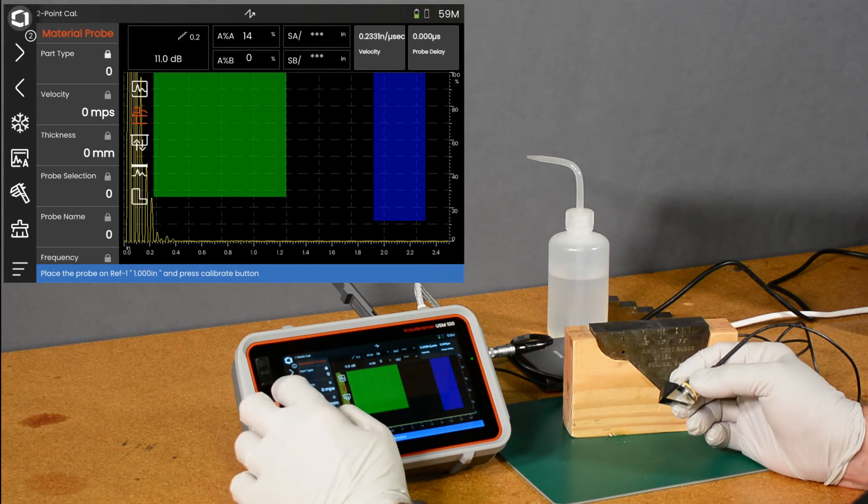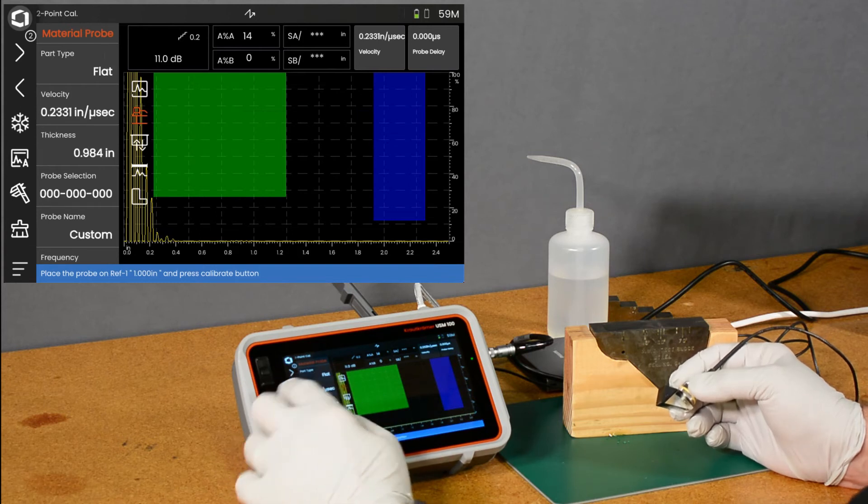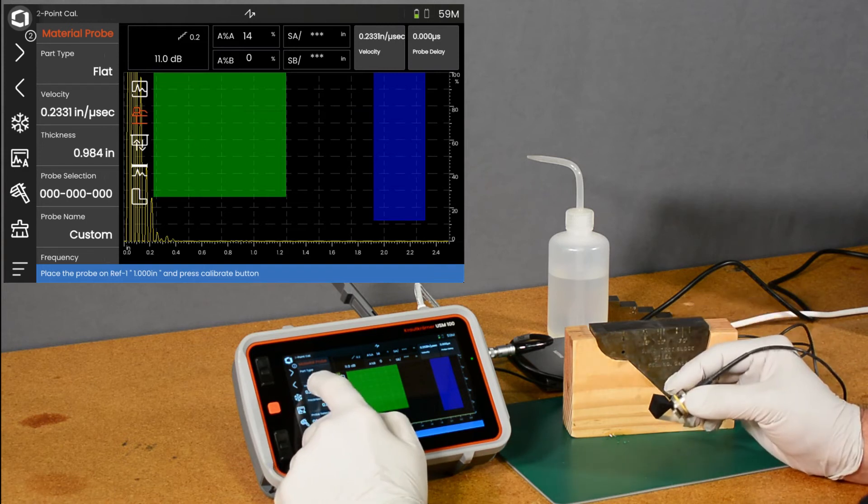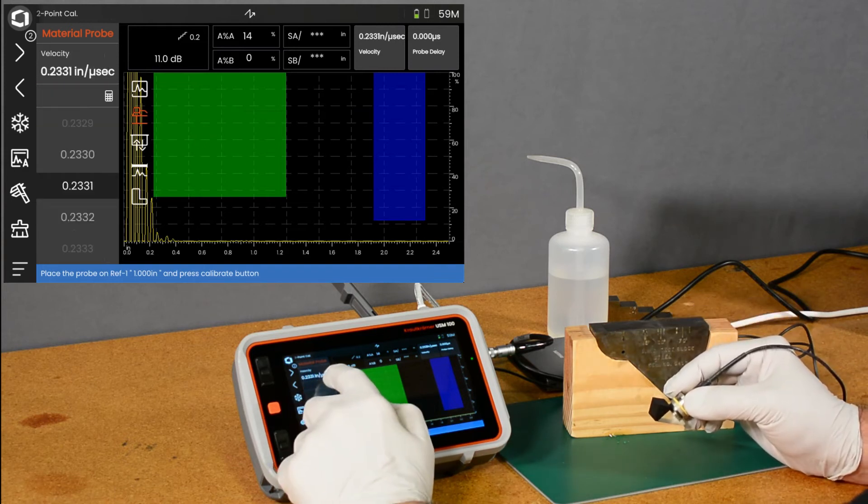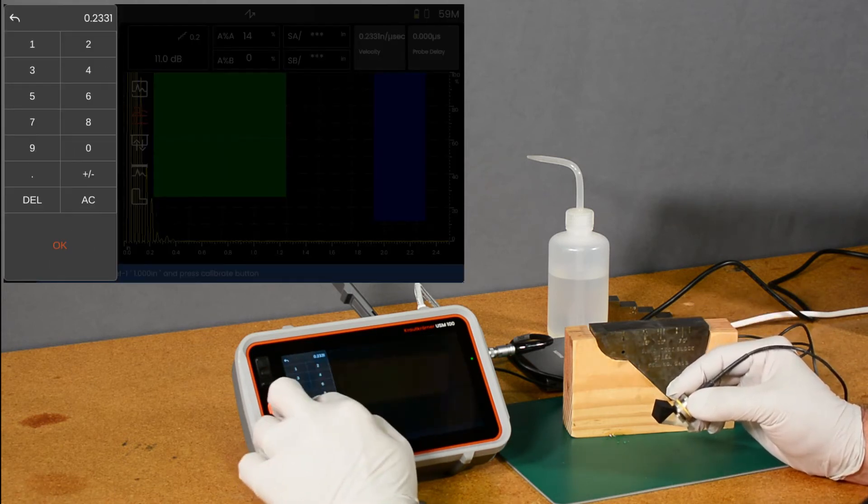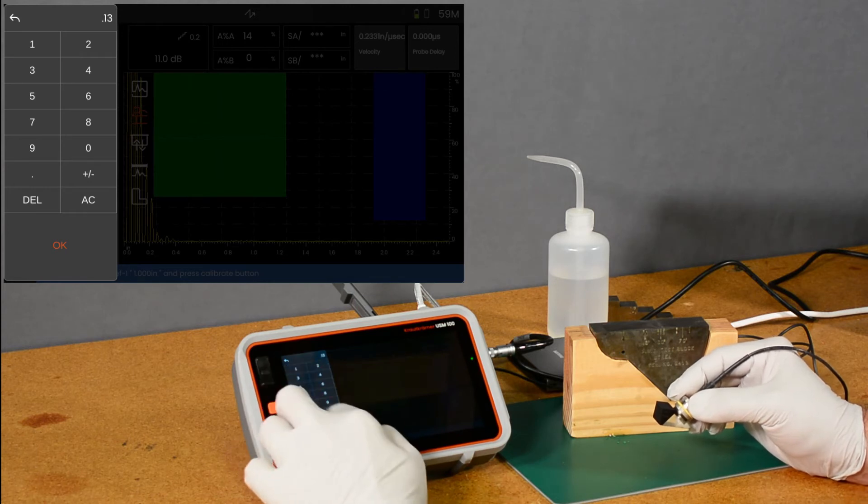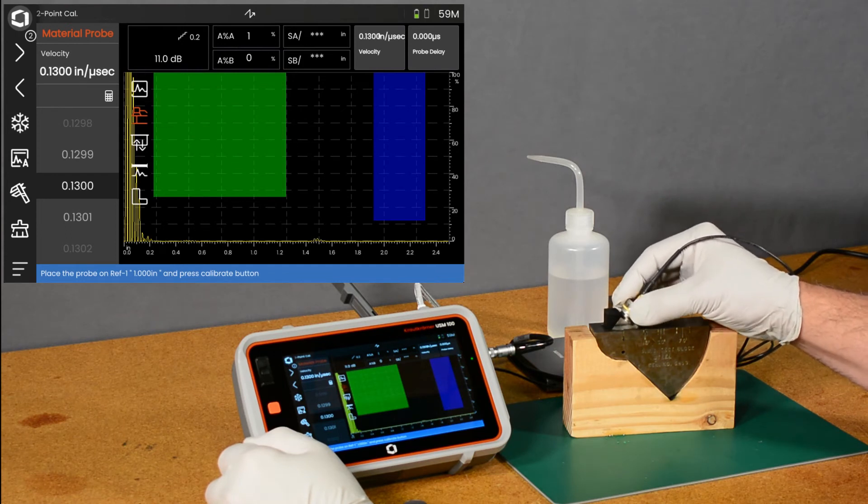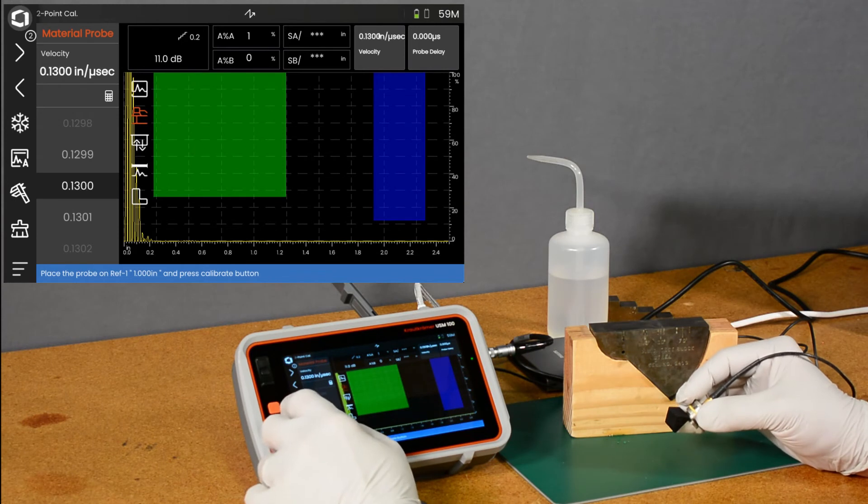So let's go back here and set up. Go to our probe menu. First thing we ought to do, since we're going to be working in shear wave, is just change the ballpark figure for our velocity to get us in the general area of shear velocity in steel. I pick 0.13 there.